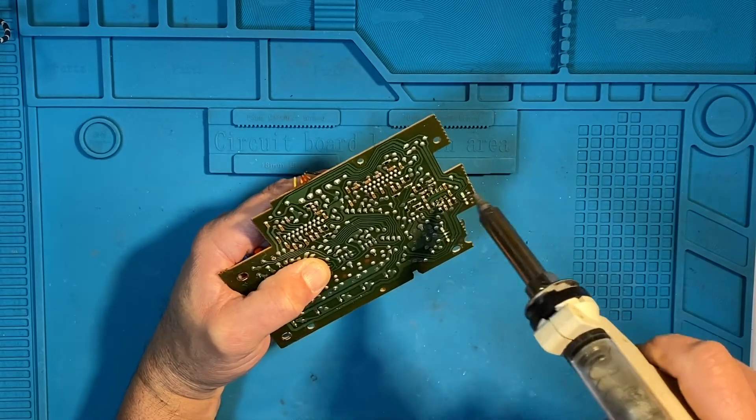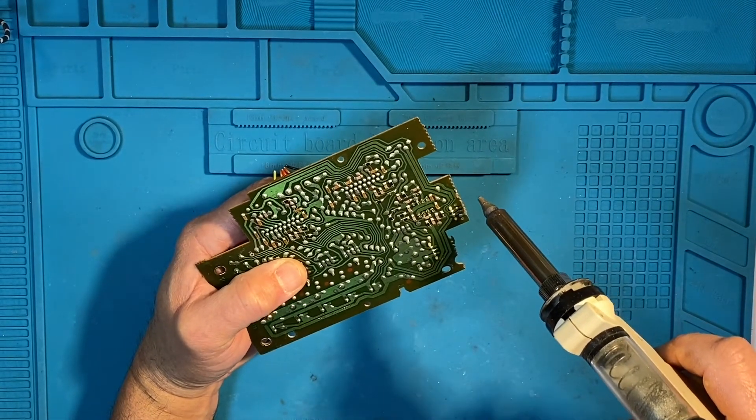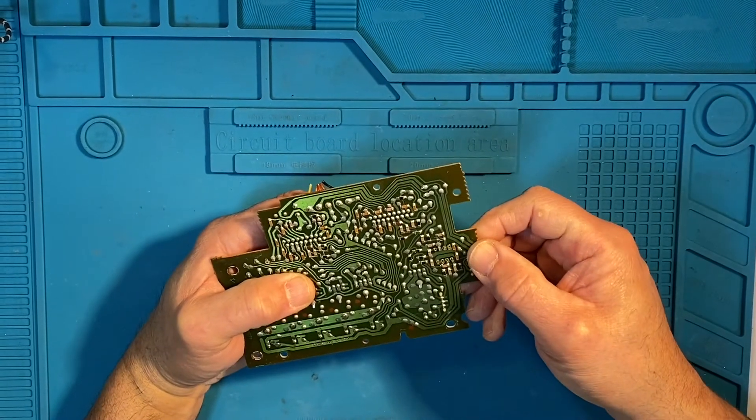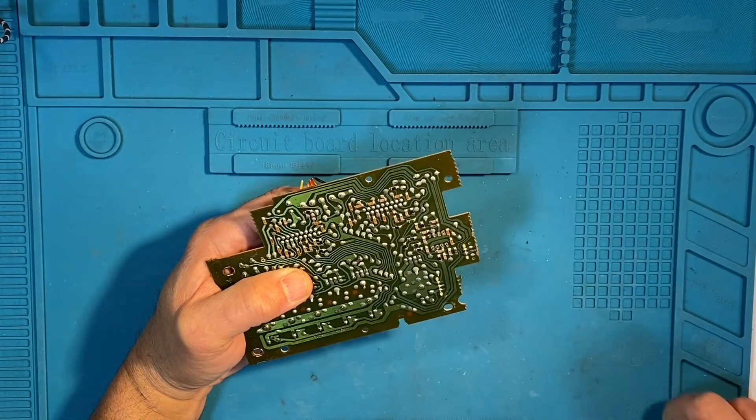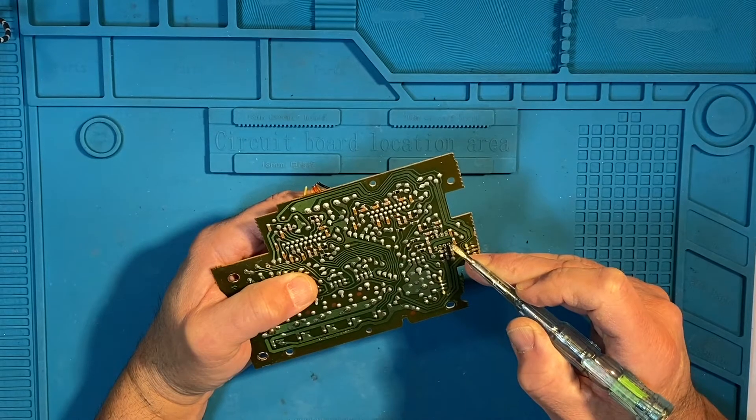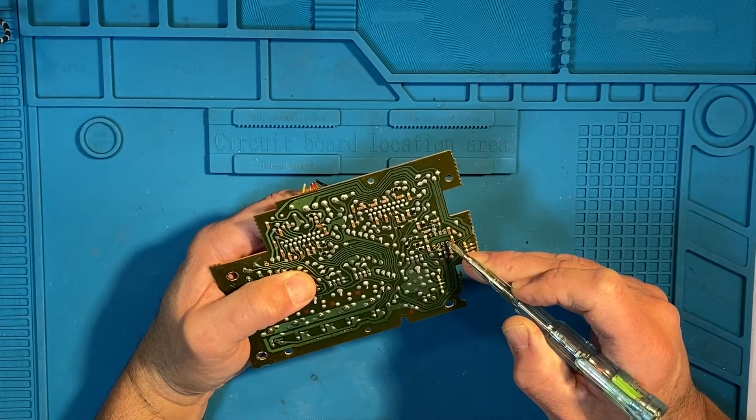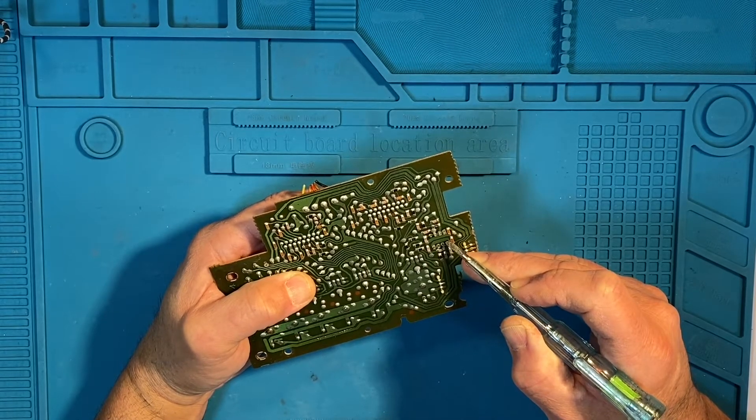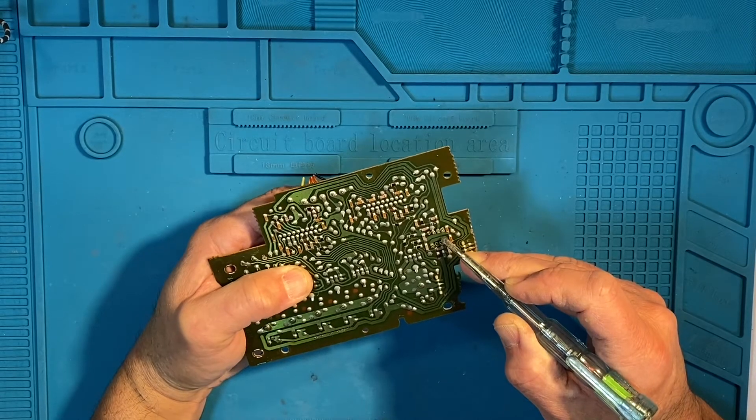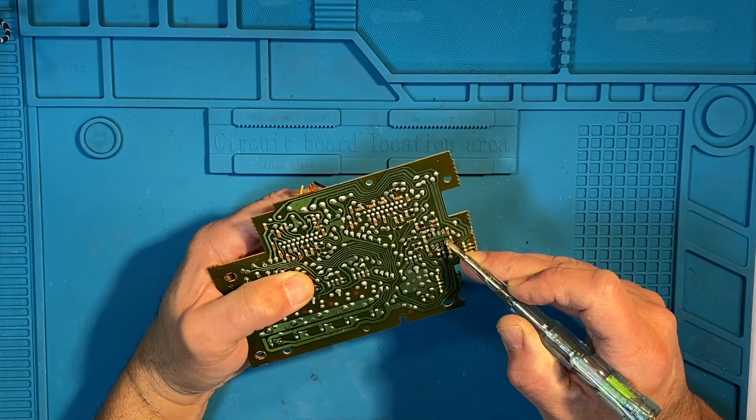That one wasn't so great. Of course, you've got to balance this being an old board. If you're replacing something, you've got to make sure you don't put too much heat on or it's going to lift the tracks. So it's great for removing components if you're not going to put components back on the same board. If you are going to put components back, then just be careful.